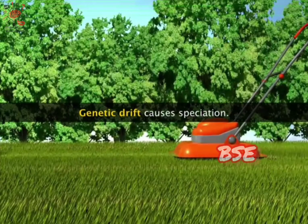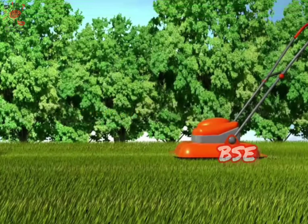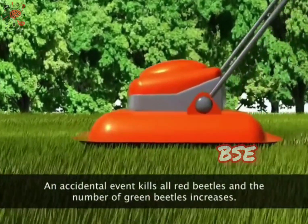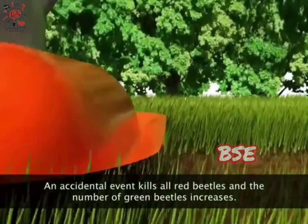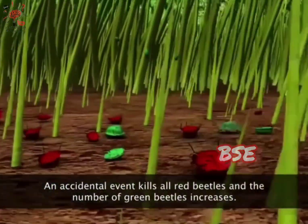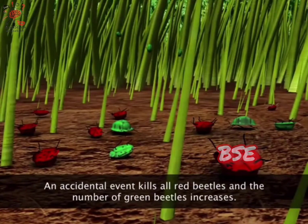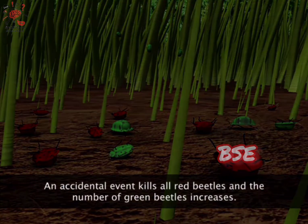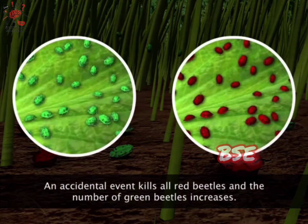Let's see how genetic drift leads to speciation. Accidental events can lead to selection and survival of particular members in a small population. This can lead to isolation of members and can further cause speciation.